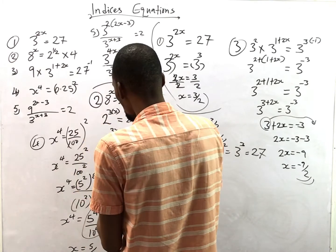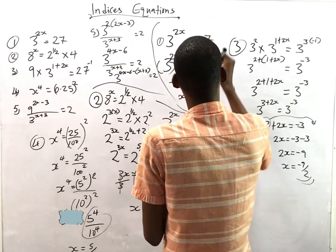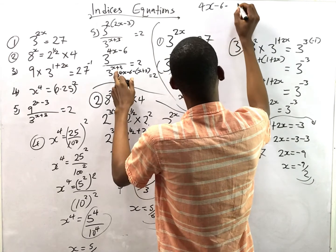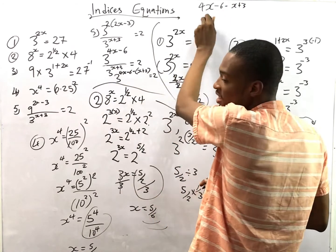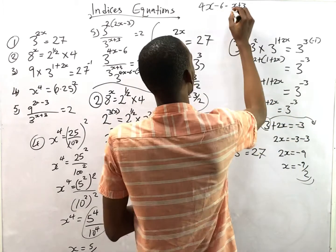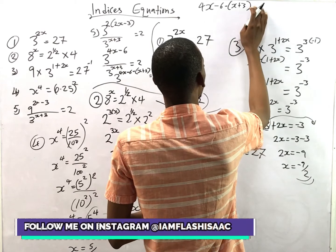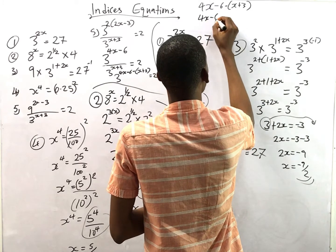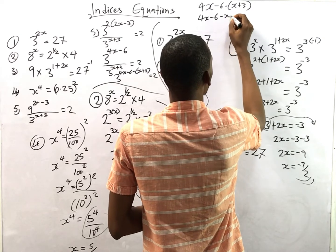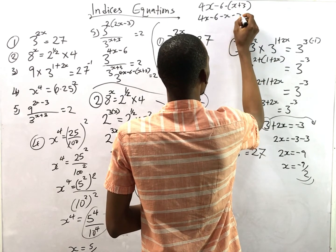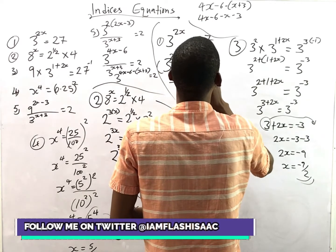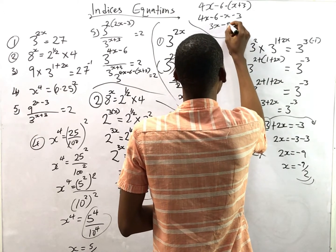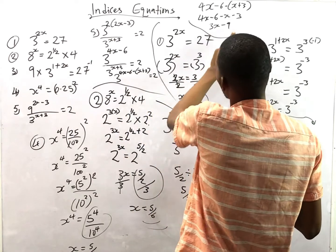Many students make a mistake here: when subtracting (s+3), put it in brackets. So we have 4s - 6 - (s + 3) = 4s - 6 - s - 3. Combining like terms: 4s - s = 3s, and -6 - 3 = -9. So we get 3^(3s - 9) = 2.